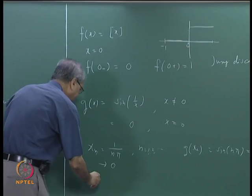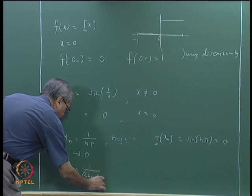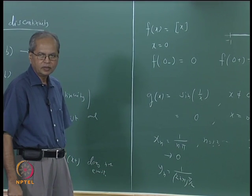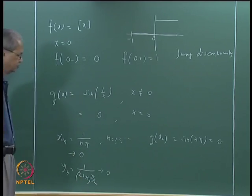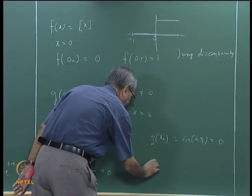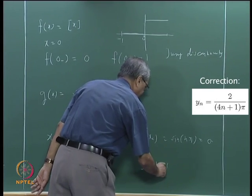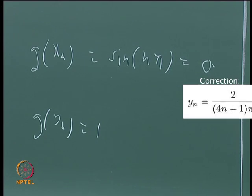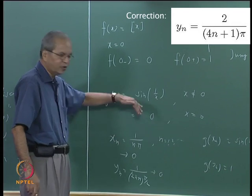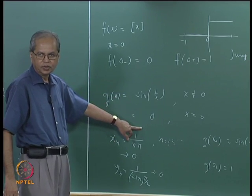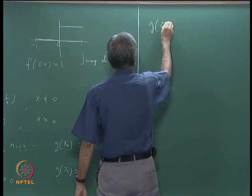Now take y_n = 1/((2n+1)π/2) = 2/((2n+1)π). This also tends to 0 from the right, and g(y_n) = sin((2n+1)π/2) = 1 for all n. So x_n → 0, y_n → 0 both from the right, but g(x_n) → 0 while g(y_n) → 1. This shows the right-hand limit does not exist.